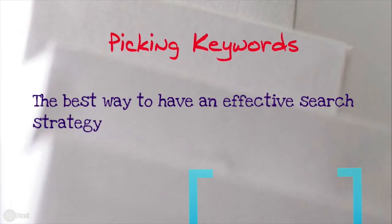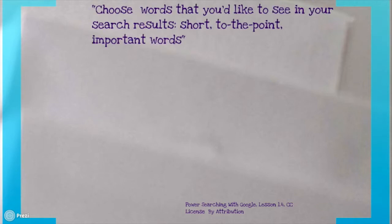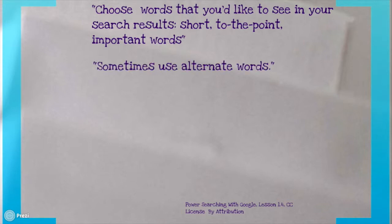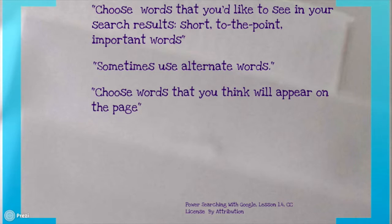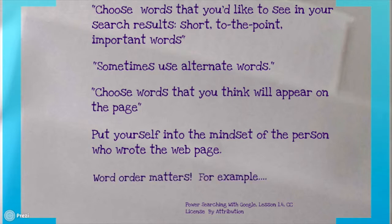So knowing that, it really is important to pick the right keywords to find the information that you want. Let's imagine we have this question: we've heard that there was some old city in San Francisco Bay and we want to know what it was called. Before we do our search, let's keep these tips in mind. You should choose words that you'd like to see in your search results — they should be right to the point, important words that describe the answer that you want. You should think of alternative words, synonyms that mean much the same thing, and choose words that you think will appear on that page. Put yourself into the mindset of the person who wrote the web page, and that way you will find the information that you want. And word order really matters — I'm going to show you an example from two different web searches to prove that.